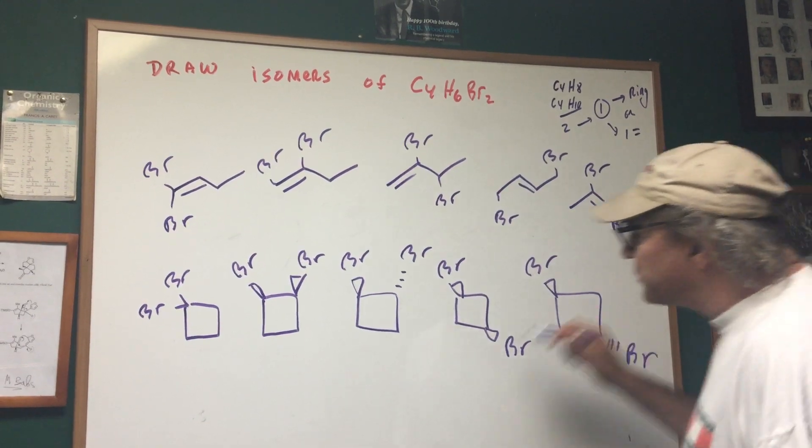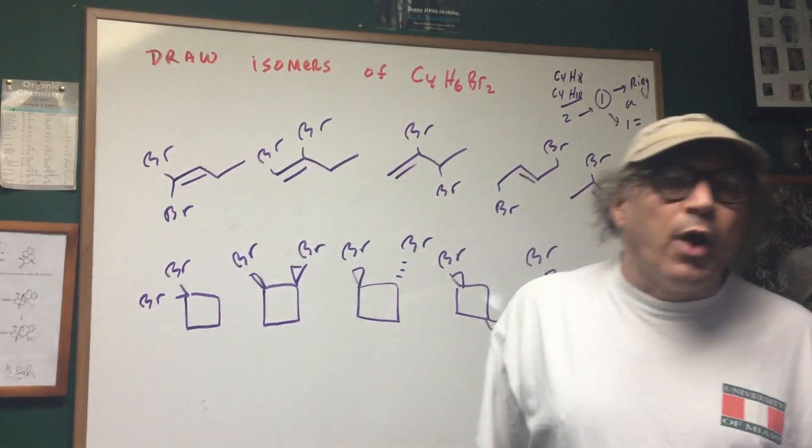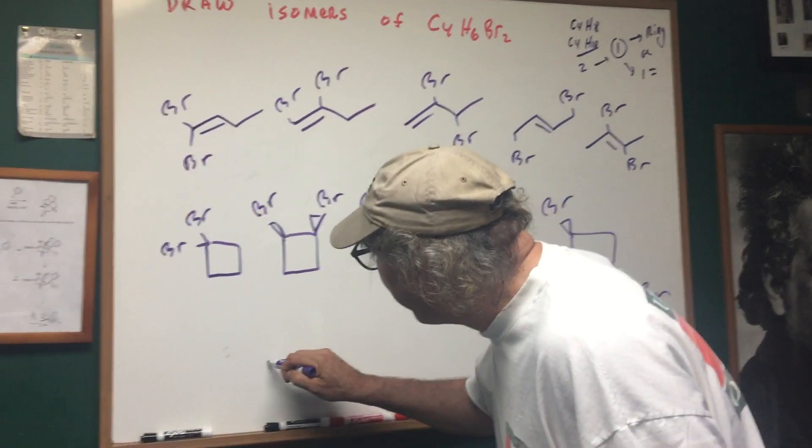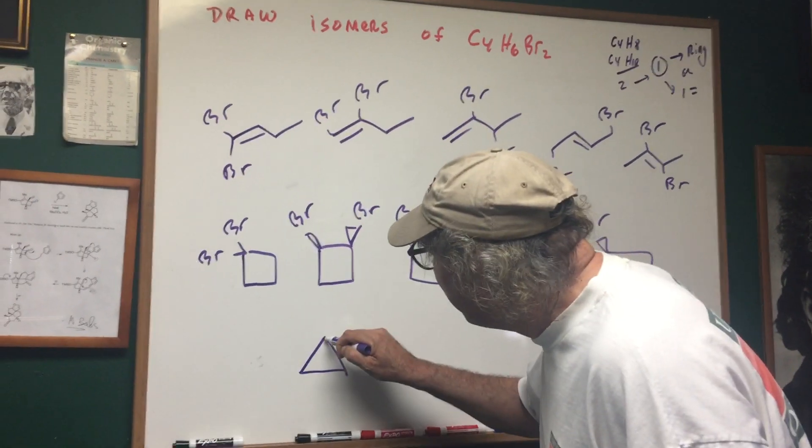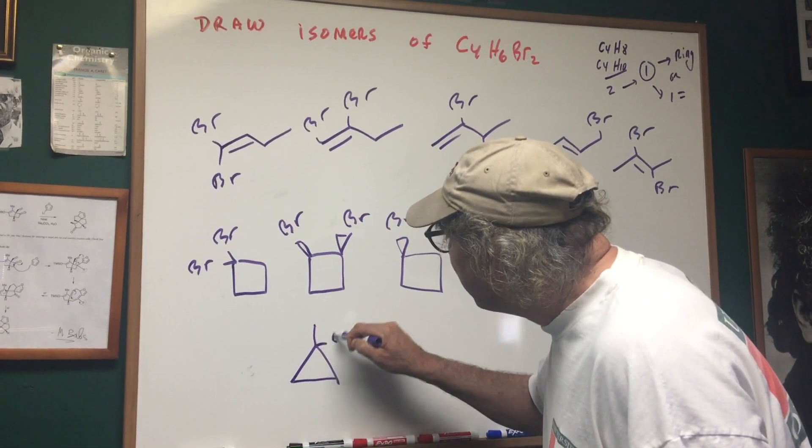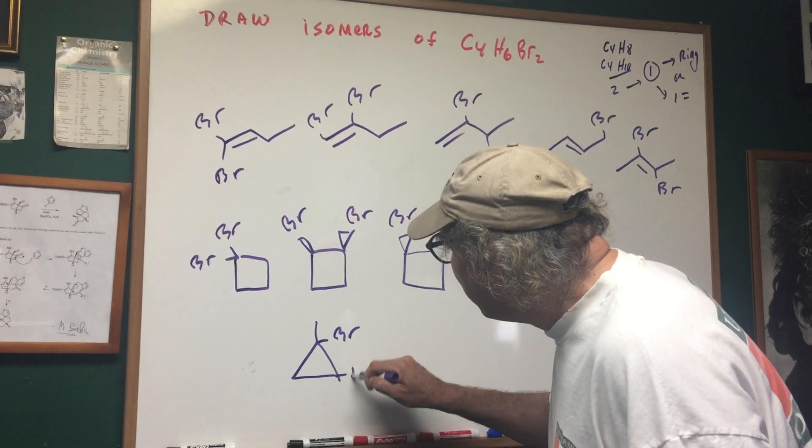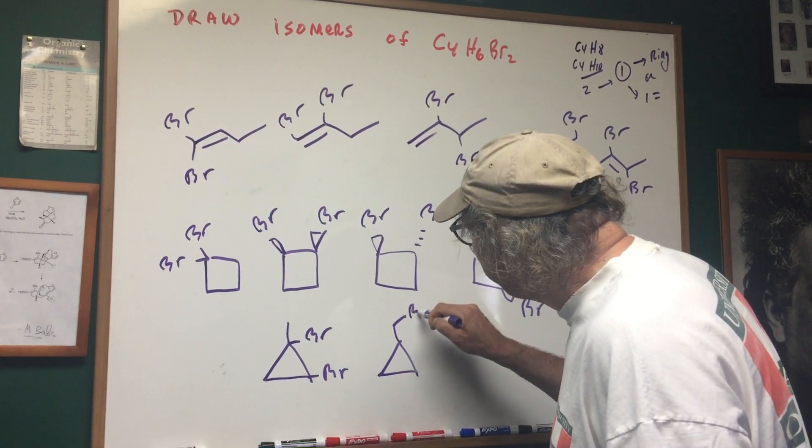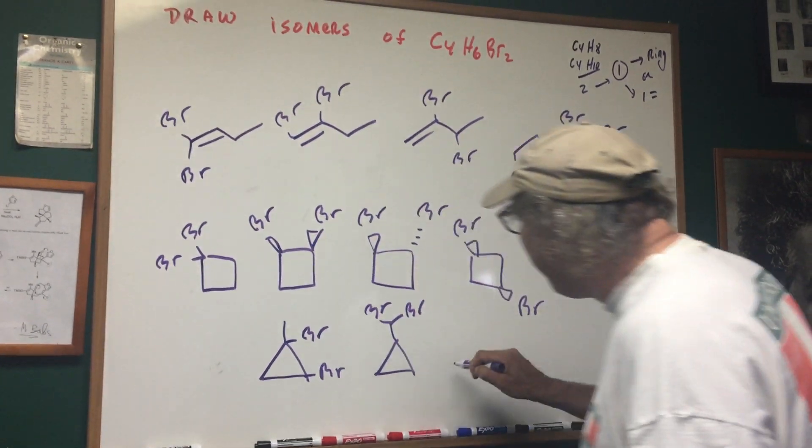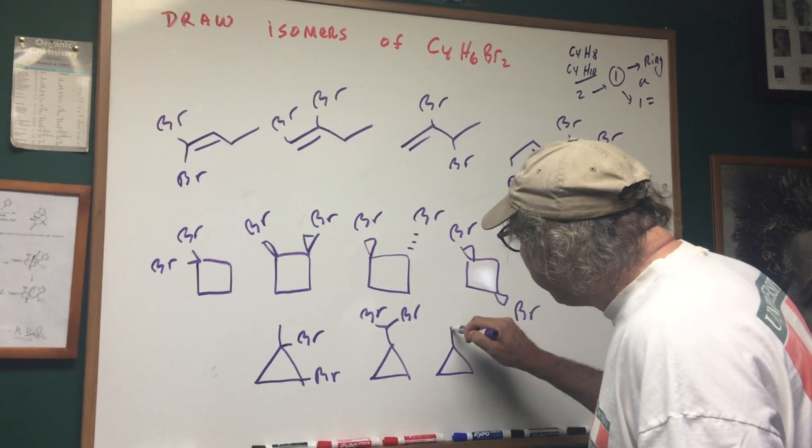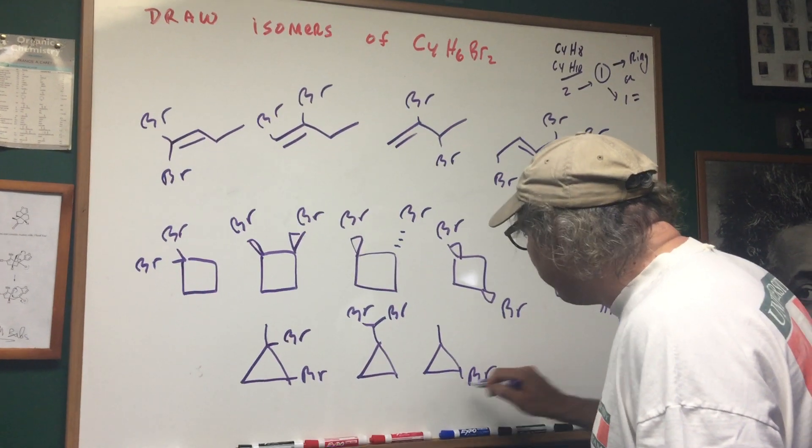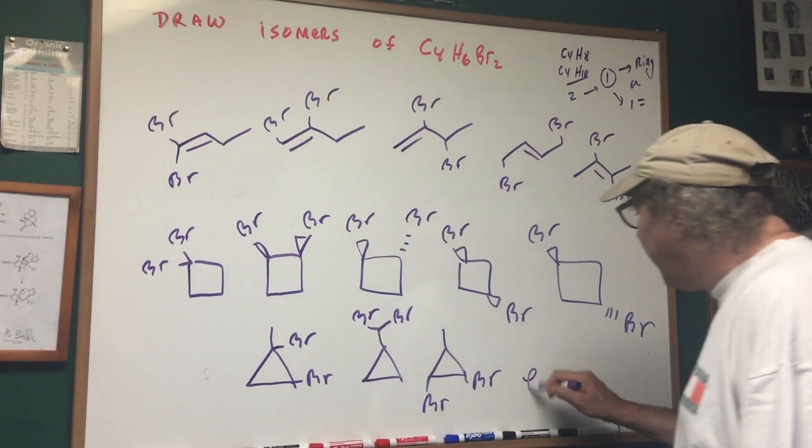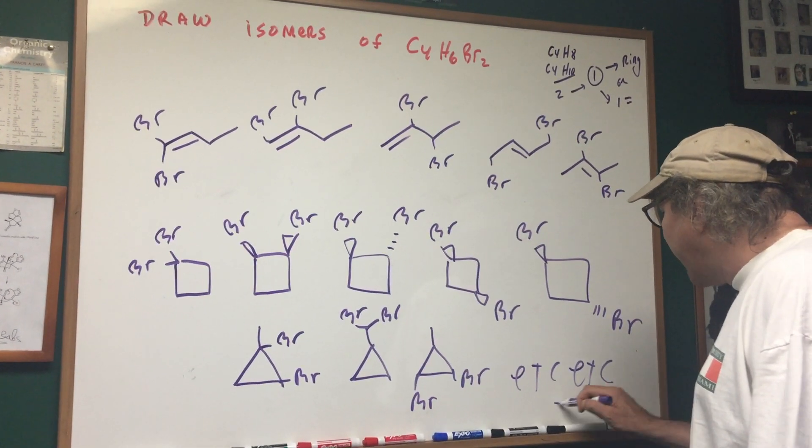Or who's to say it's got to be a four-membered ring, let's spice it up. What if we get a three-membered ring? I have a three-membered ring and then I have a carbon, I could put a bromine here and a bromine here, or I can go here, now it's getting really exciting here and here, or I can go here, I could put a bromine here and a bromine here, etc. etc. etc.